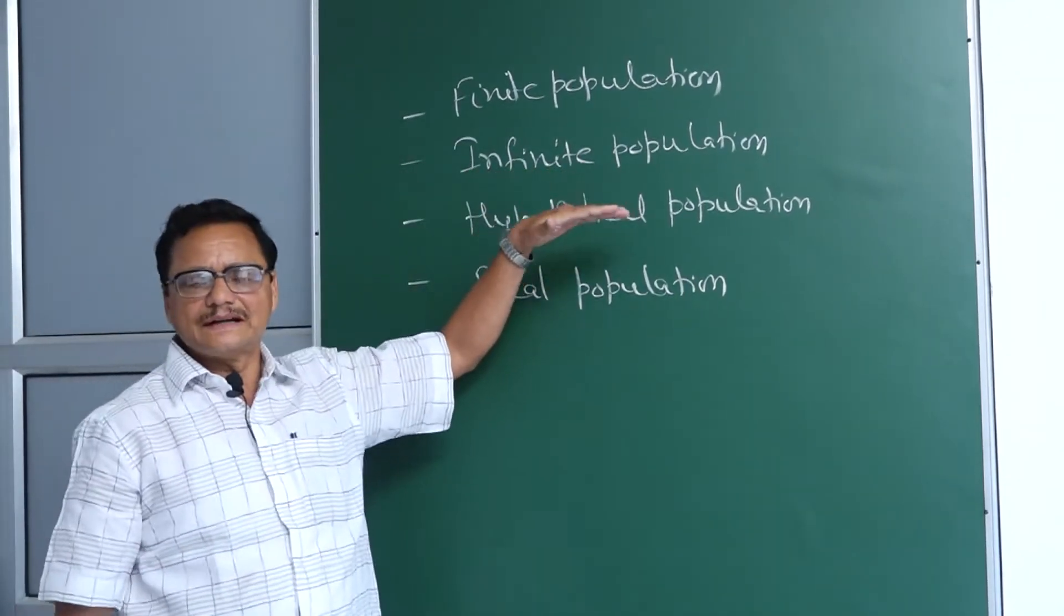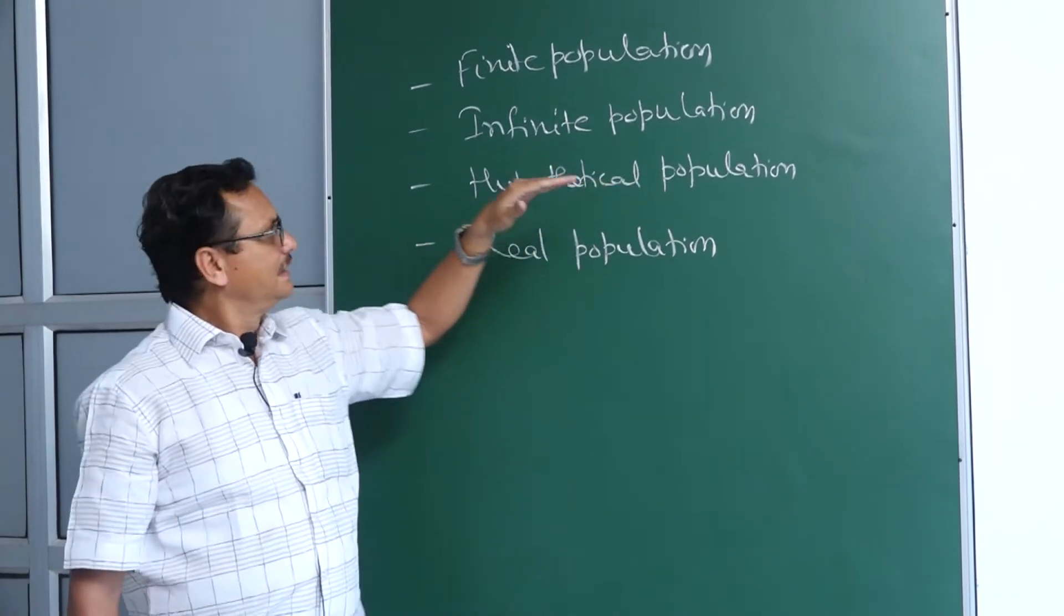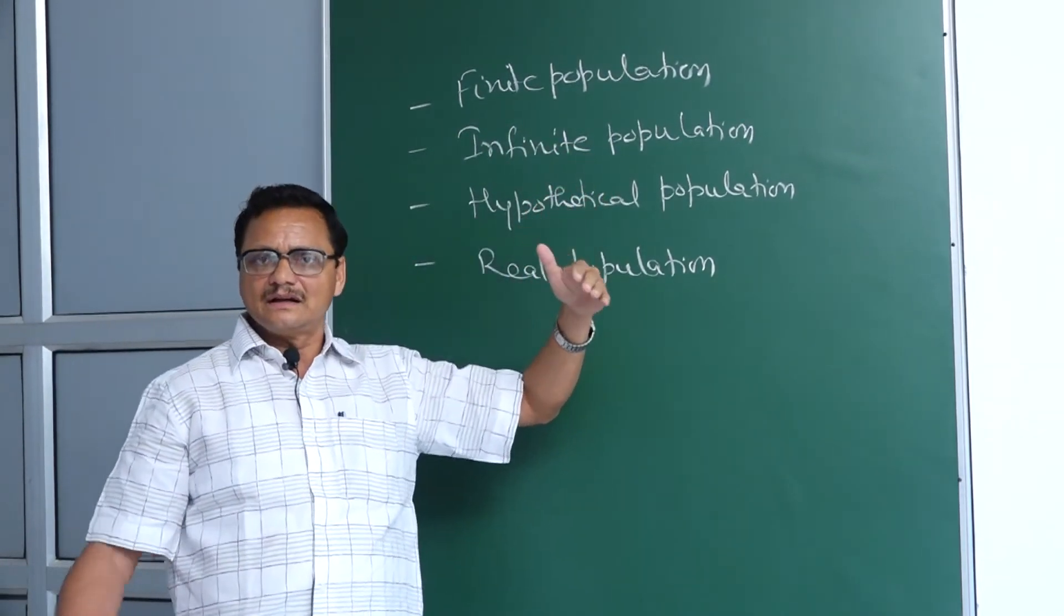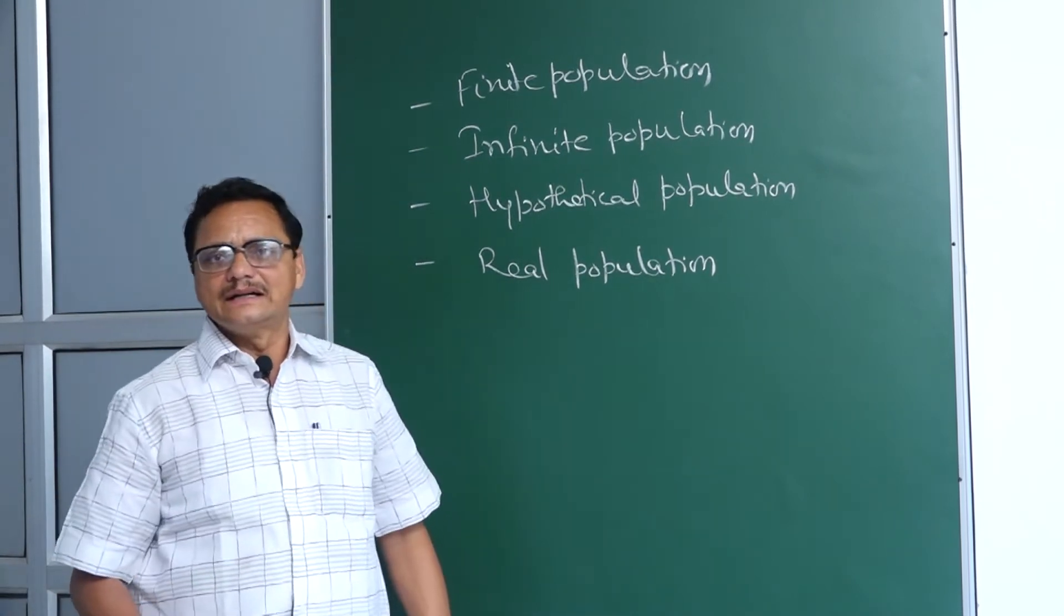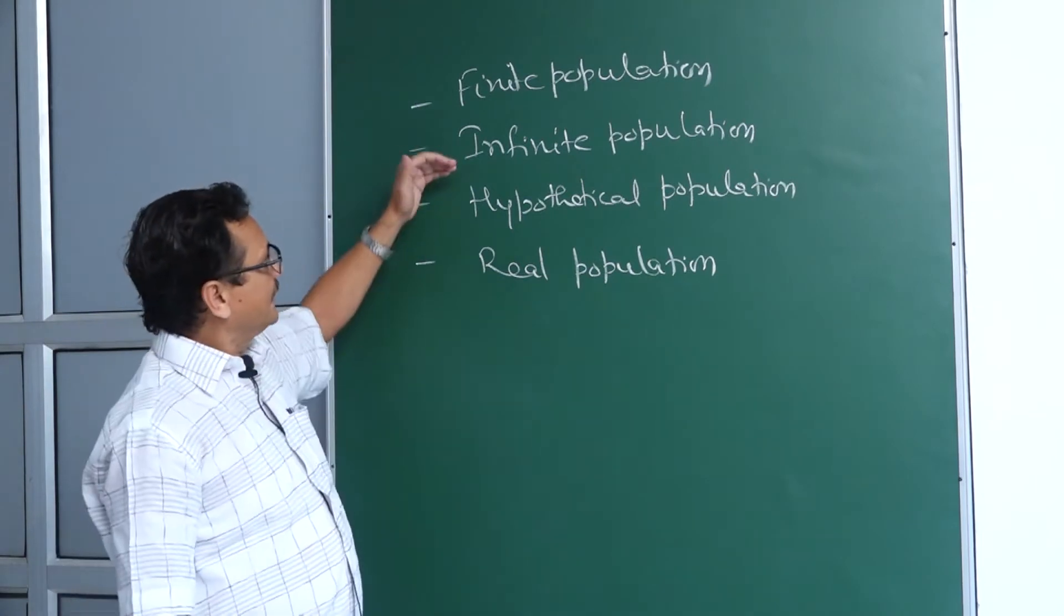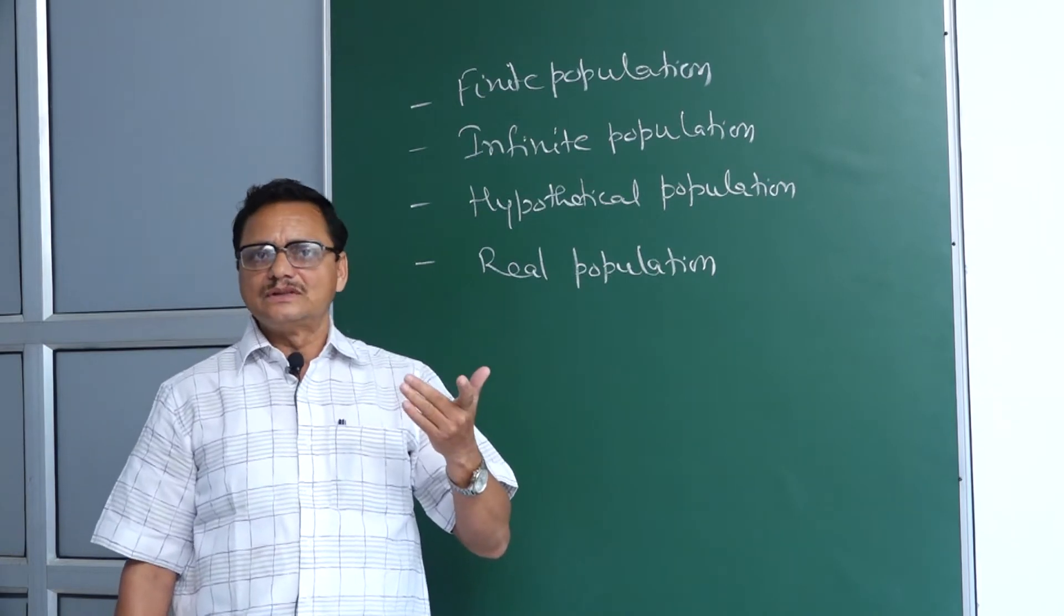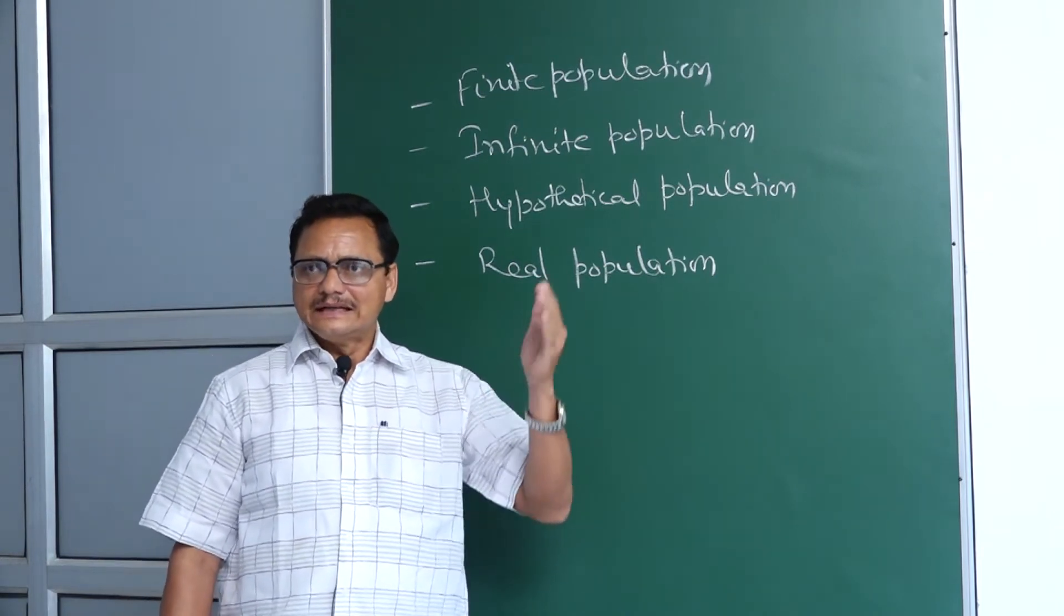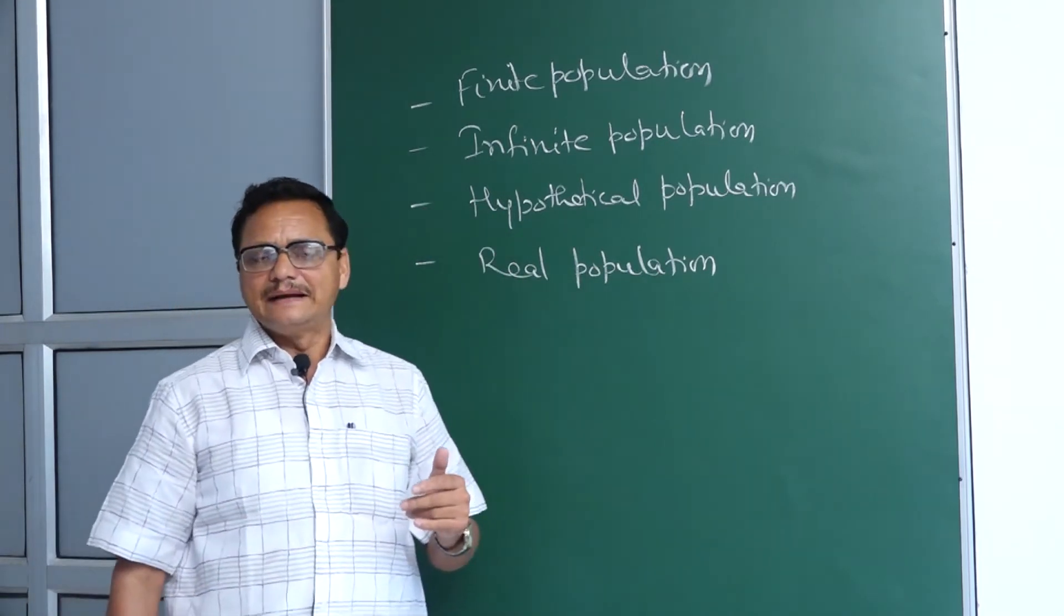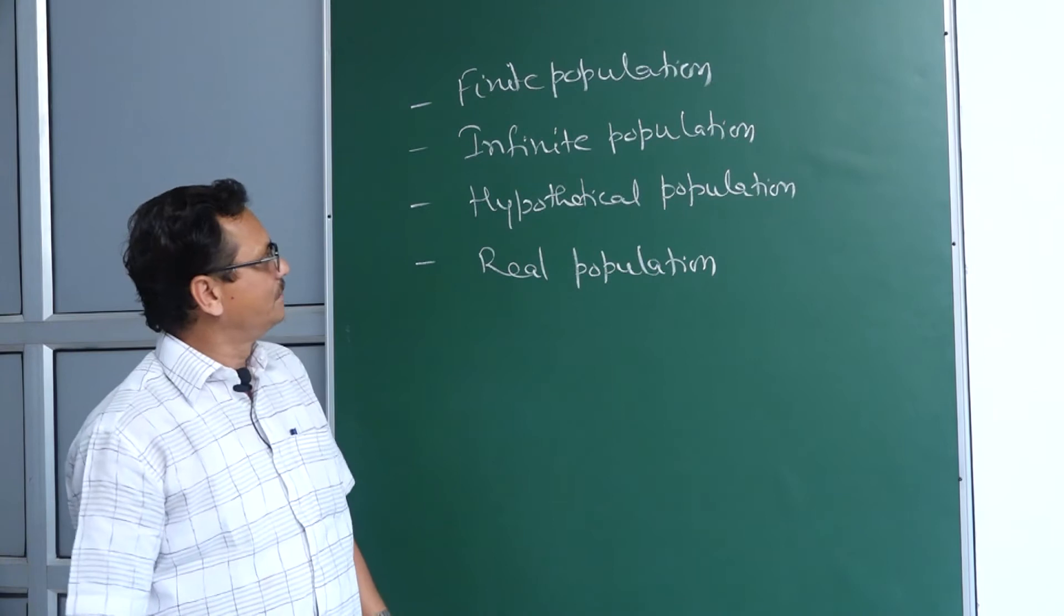Finite population means we can count the total population. Infinite population cannot be counted, just like for example, stars and particles in a cement bag or in the human body. This type of population is known as infinite population.